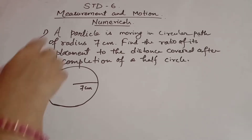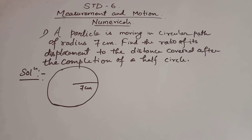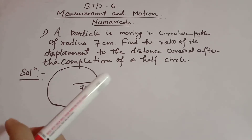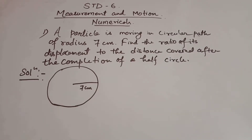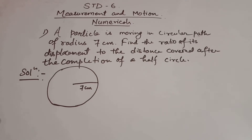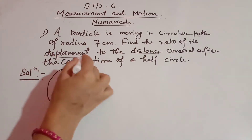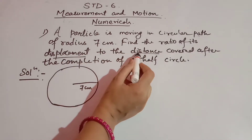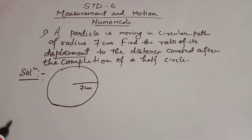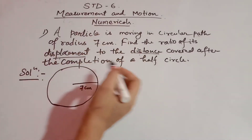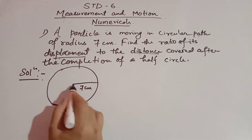Today we solve some numericals of the chapter Measurement in Motion, Standard 6. The question is: a particle is moving in a circular path of radius 7 centimeters. Find the ratio of its displacement to the distance covered after the completion of half a circle. Before you solve the question, you should be clear about the concept of distance and displacement. Distance is the actual length of the path, and displacement is the shortest distance between the initial and final positions.